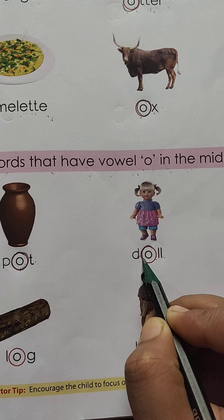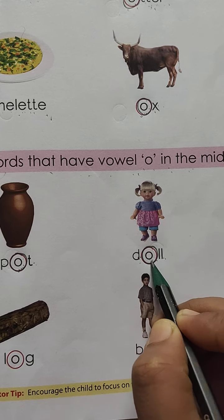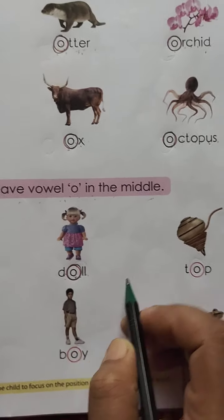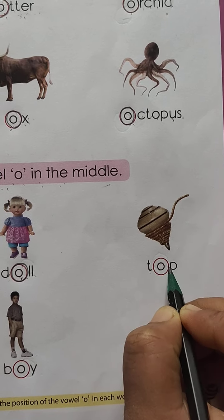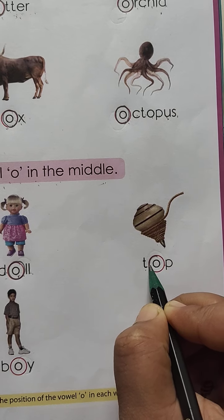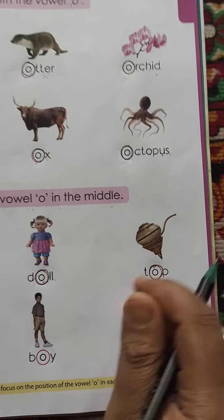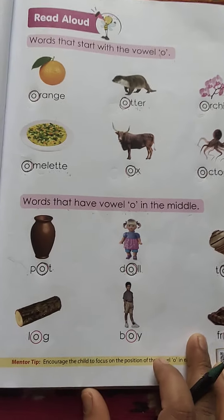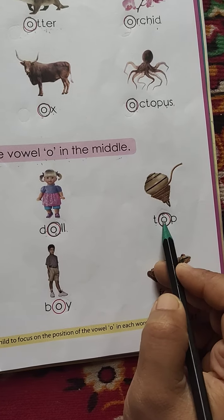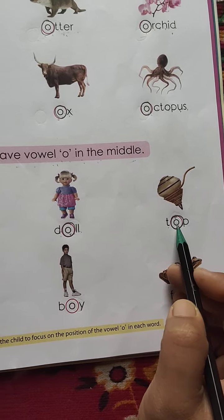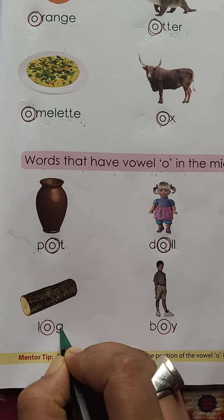D O L L — doll. Here you can see vowel O is in the middle, so circle the vowel O. T O P — top. Vowel O is in this word in the middle, so circle the vowel O. L O G — log. Circle the vowel O in the middle.